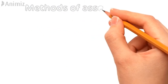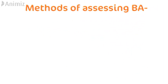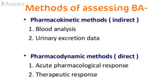Now let's look at some methods for assessing bioavailability. We have pharmacokinetic methods, which are indirect methods — these include blood analysis and urinary excretion data. We also have pharmacodynamic methods, which are direct methods — these include acute pharmacological response and therapeutic response.